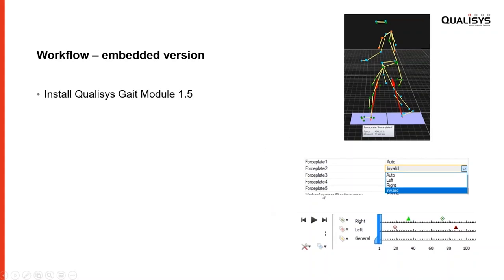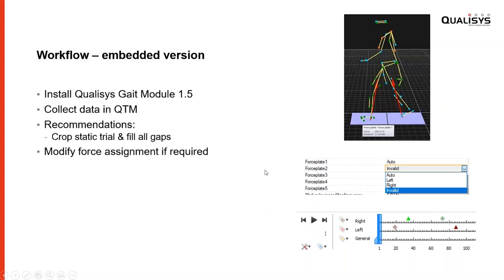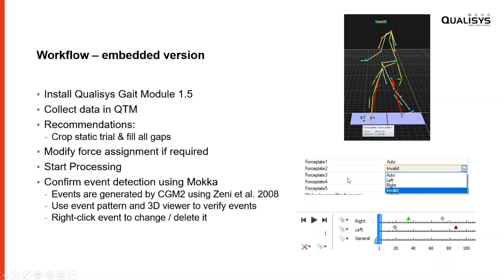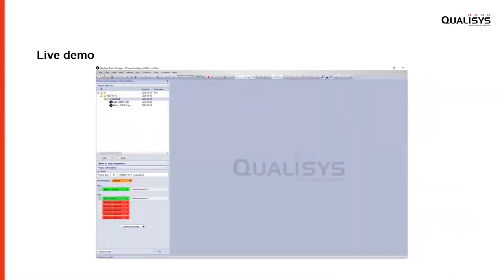I'll keep the workflow description brief now because Vincent will show it live in a minute. Basically, you collect data, we recommend cropping the static trial and filling gaps, you can modify force assignments and mark any invalid force contacts in each file, and then you run the processing. During processing, you will see MoCA pop up — an open-source C3D viewer used to verify gait events. Each event appears as a dot in the time bar, providing a convenient way to verify that events are identified correctly. Then you review the report.